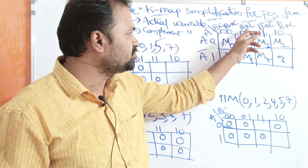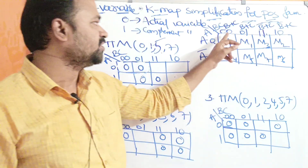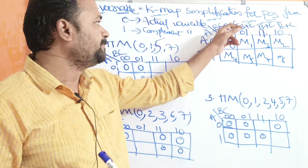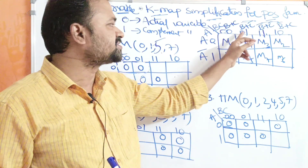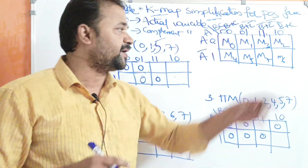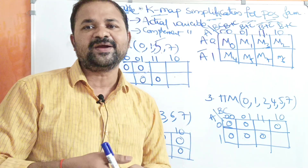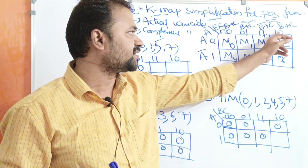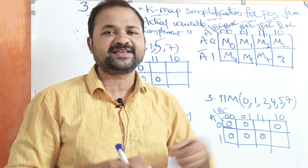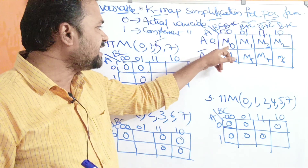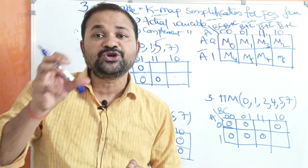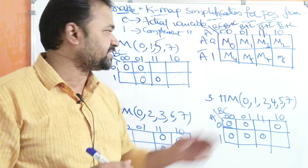The cells are labeled 00, 01, 11, 10. For 00, both are actual variables: B + C. For 01, actual variable plus complement: B + C bar. For 11, both complements: B bar + C bar. For 10, complement plus actual: B bar + C. This cell represents 000, which is the 0th max term.